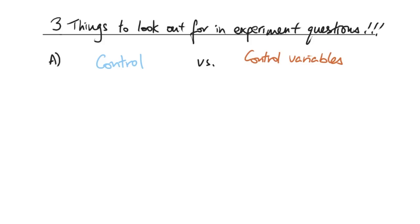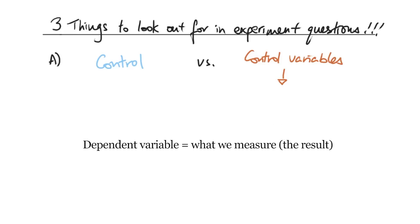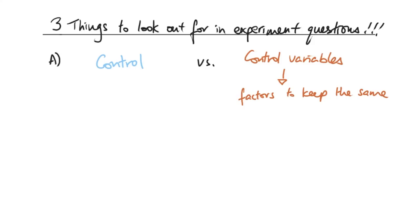The first one is control versus control variables. You may be familiar with variables: independent variables, dependent variables, and control variables. Independent variables are things that you change in the experiment to see their effect. Dependent variables are the results, whereas control variables are factors that we need to keep the same throughout the entire experiment. The point of this is to ensure there is high validity for your results — if you keep these things the same, they won't affect the results, but if they change, they will affect your dependent variable.